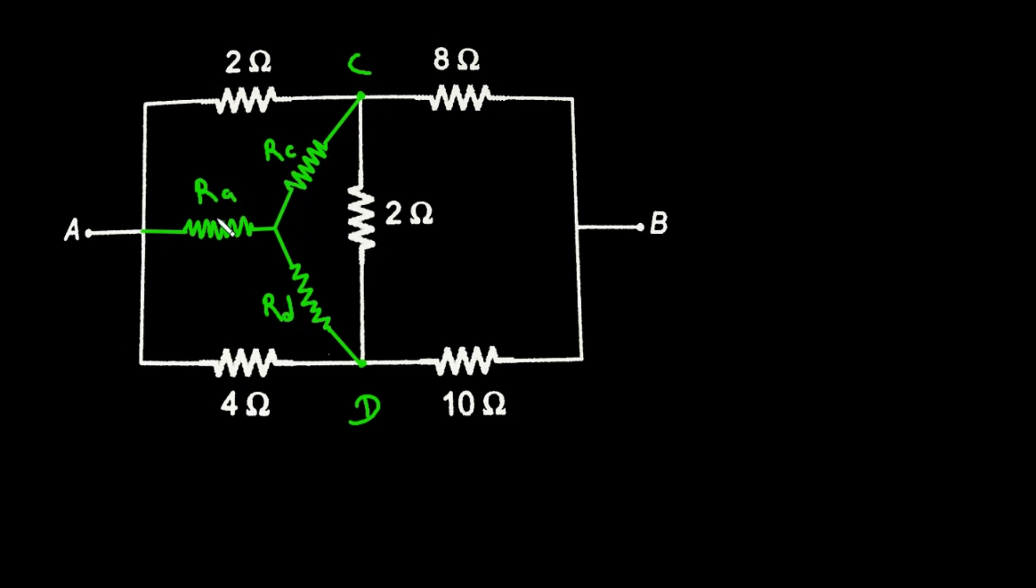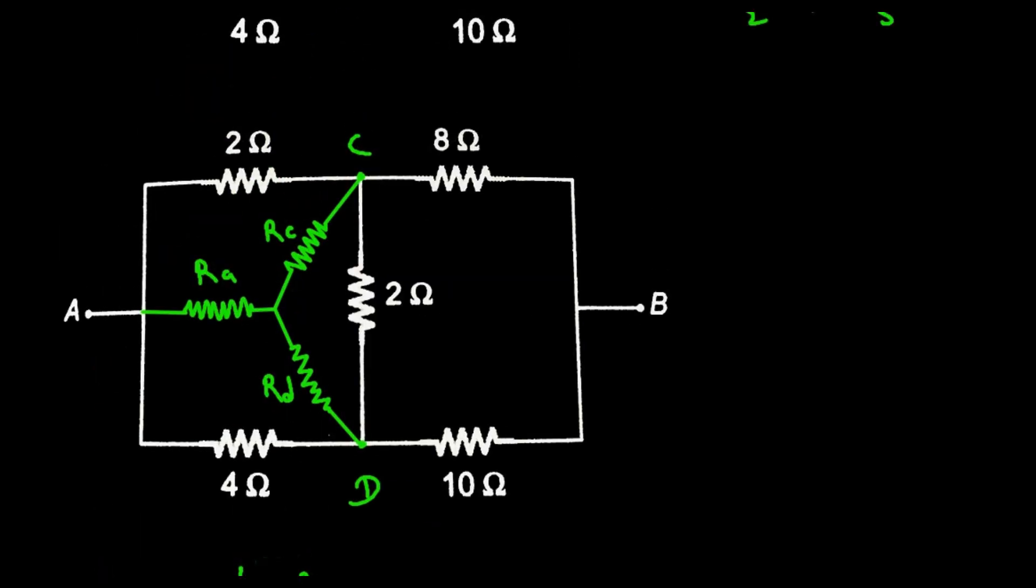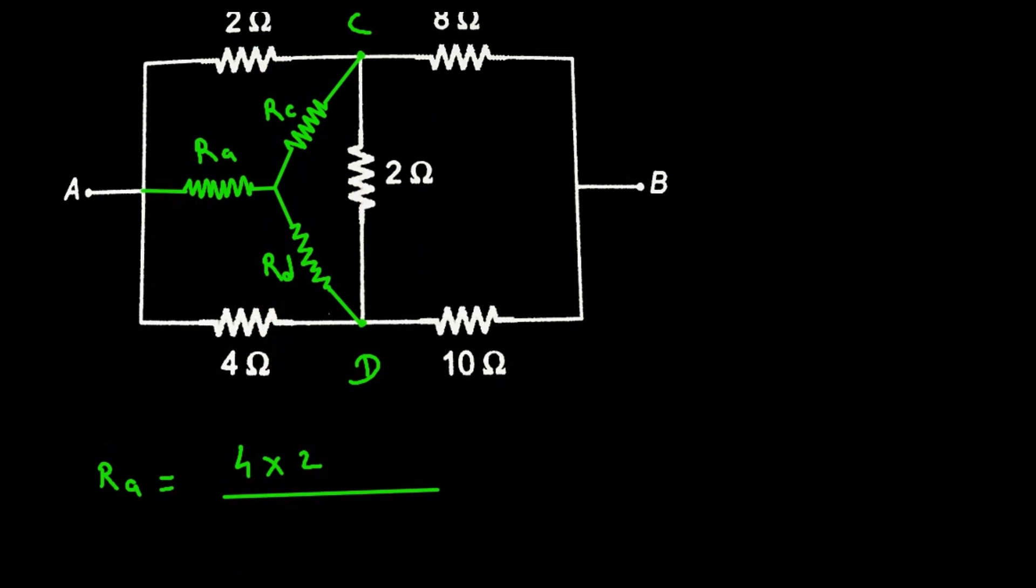So first of all we have to find the value of R A. So simply R A will be equal to this resistance multiplied with this resistance. So it will be like this 4 multiplied with 2 divided by we have to take addition of all. So it will be 4 plus 2 plus 2.